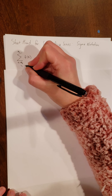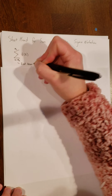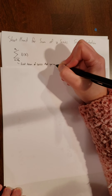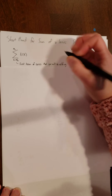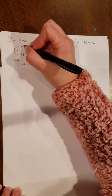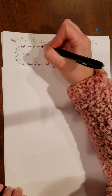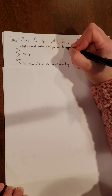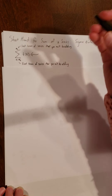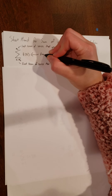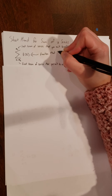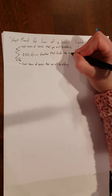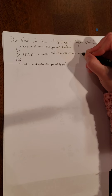The number on the bottom represents the first term of the series that you will be adding, and the number on top is going to be the last term of the series that you will be adding. The expression f(k) represents the function that finds the term in the series in position k.